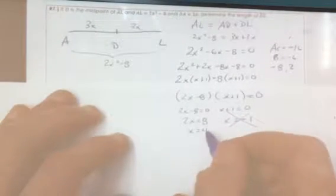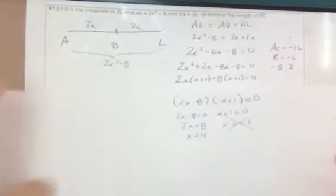So we use x equals 4. And we'll say that DL equals 3 times 4 equals 12 units.